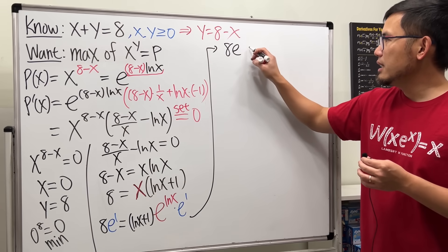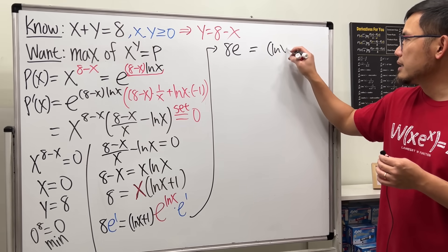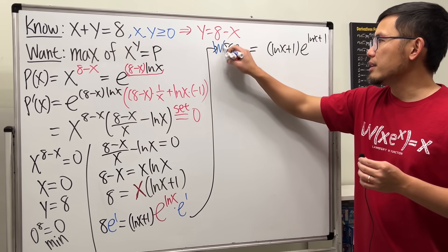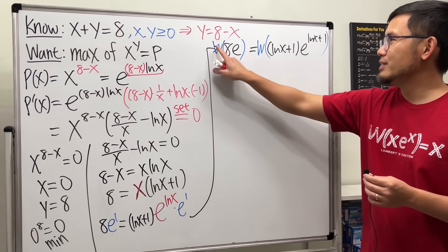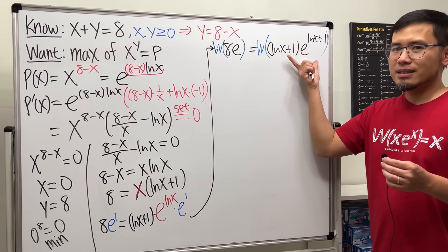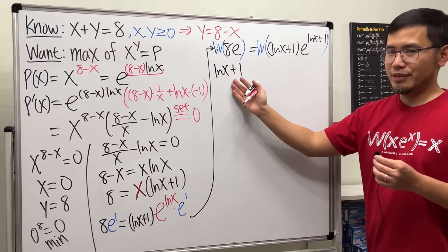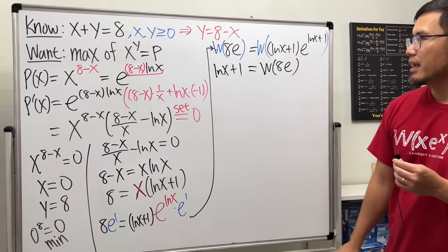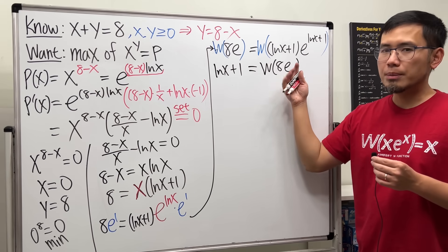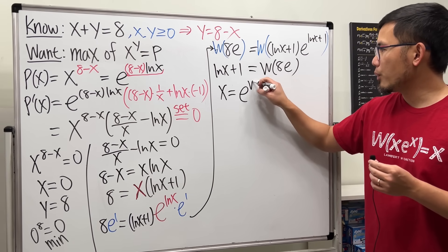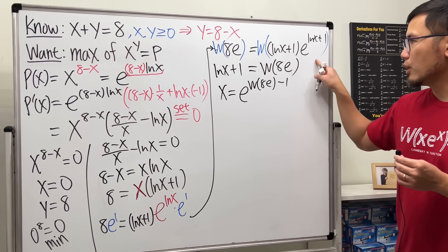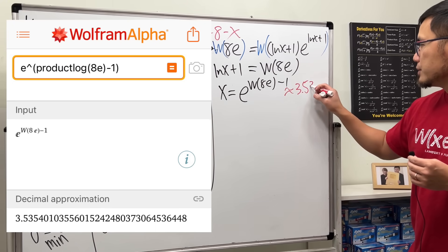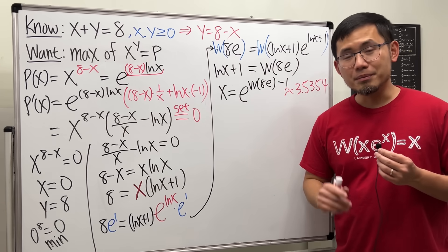We are looking at 8e equals (ln x plus 1) times e to the (ln x plus 1). Now, apply the Lambert W function to both sides. We get ln x plus 1 equals W(8e). To solve for x, move the 1 to the other side and exponentiate both sides: x equals e to the power of W(8e) minus 1. If you enter this on Wolfram Alpha, you get approximately 3.554 — so the guess of 3.5 earlier was pretty close.